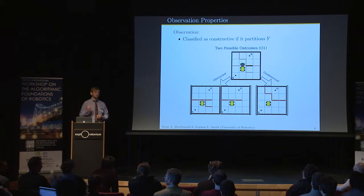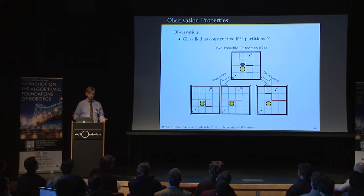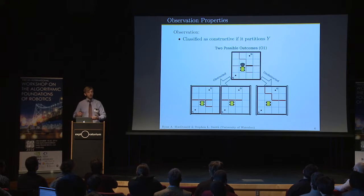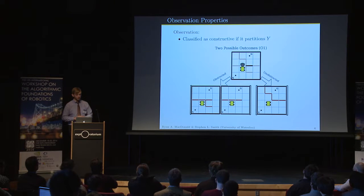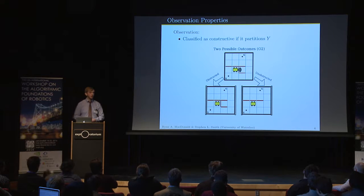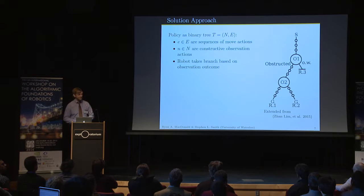We classify an observation as constructive if it partitions the belief. In our example, observing O1: if it's obstructed, that agrees with environments one and two; if it's unobstructed, that agrees with environment three — you can see this partitioning happening. You can continue partitioning the obstructed case with O2. If we encode that into a policy, it becomes a binary tree. This extends the work from Zen Lim.